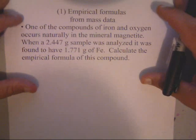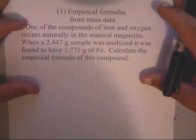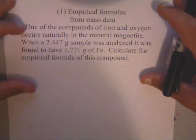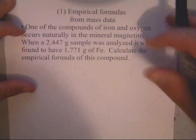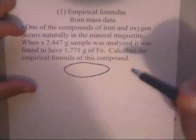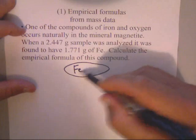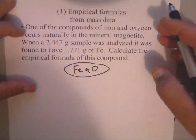Now this problem seems a little confusing at first, but it's not that bad. Here it says that one of the compounds that we have contains iron and oxygen, naturally in the mineral magnetite. So basically all that we know is that we've got some type of what used to be known as a lodestone that's made up of iron and oxygen.